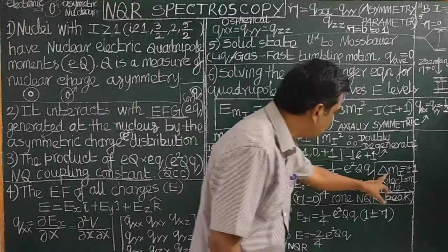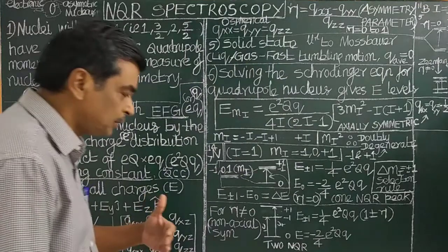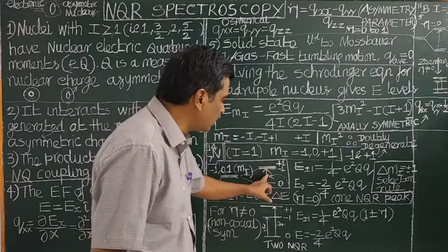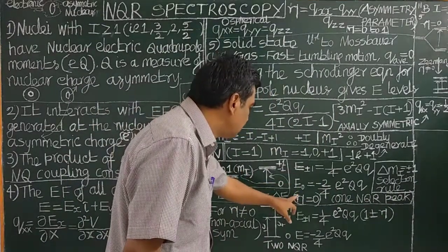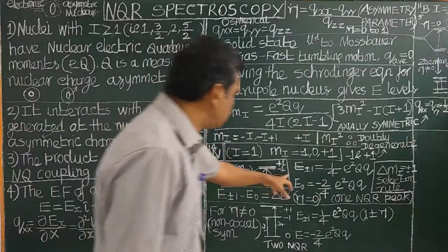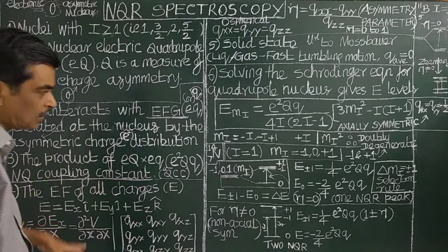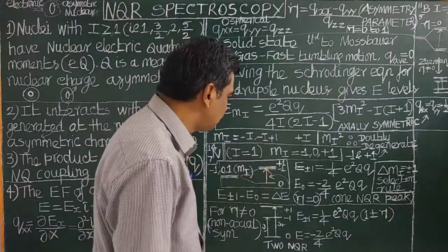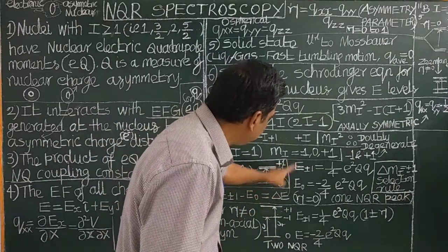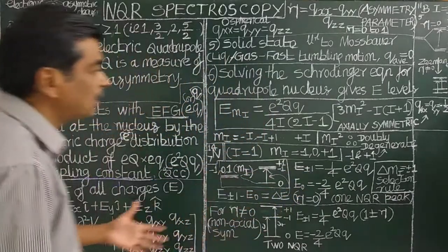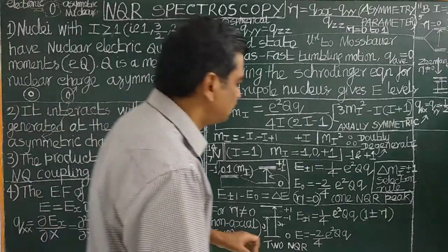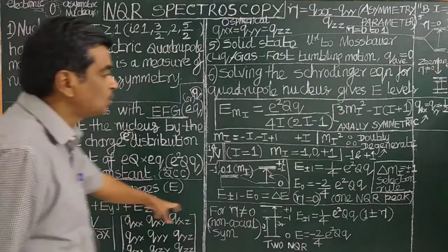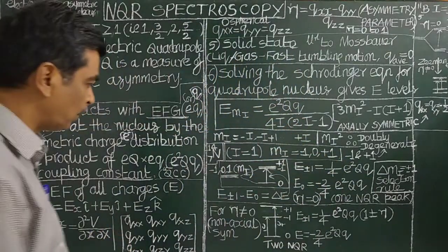By using the selection rule, there is only one transition observed for the axially symmetric case (η = 0), which corresponds to a very symmetric electronic distribution. Because of this splitting into two levels, you can calculate ΔE = E(±1) − E(0). From the NQR spectrum the frequency is obtained, and from that you can calculate the quadrupole coupling constant e²qQ.